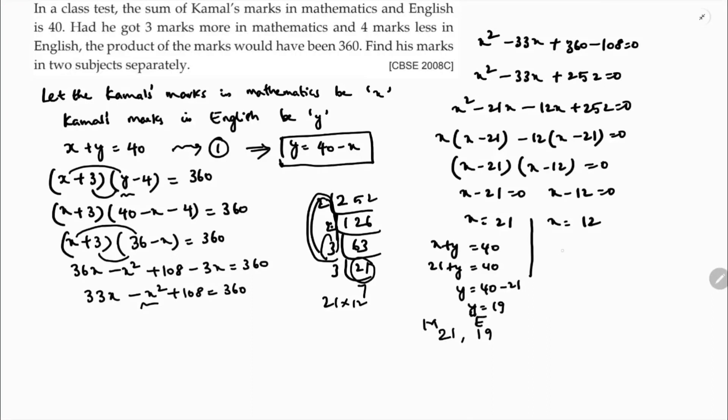If x is 12, then x plus y is 40. So 12 plus y is 40. Y is 40 minus 12, which is 28. If x is 12 in mathematics, then in English it will be 28.